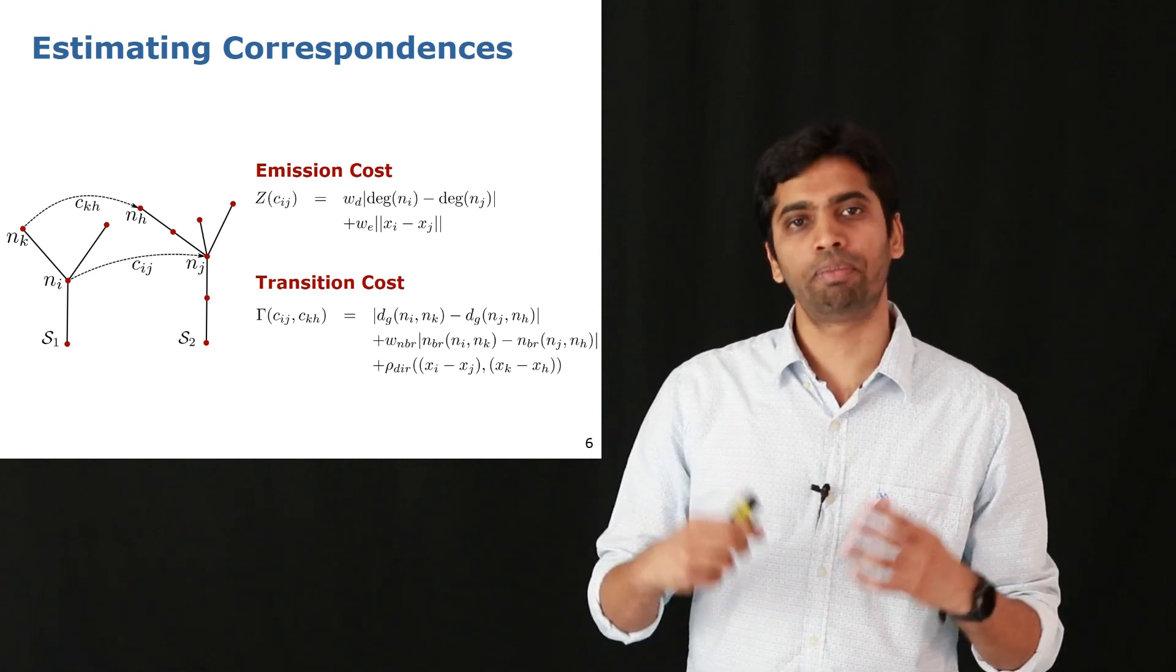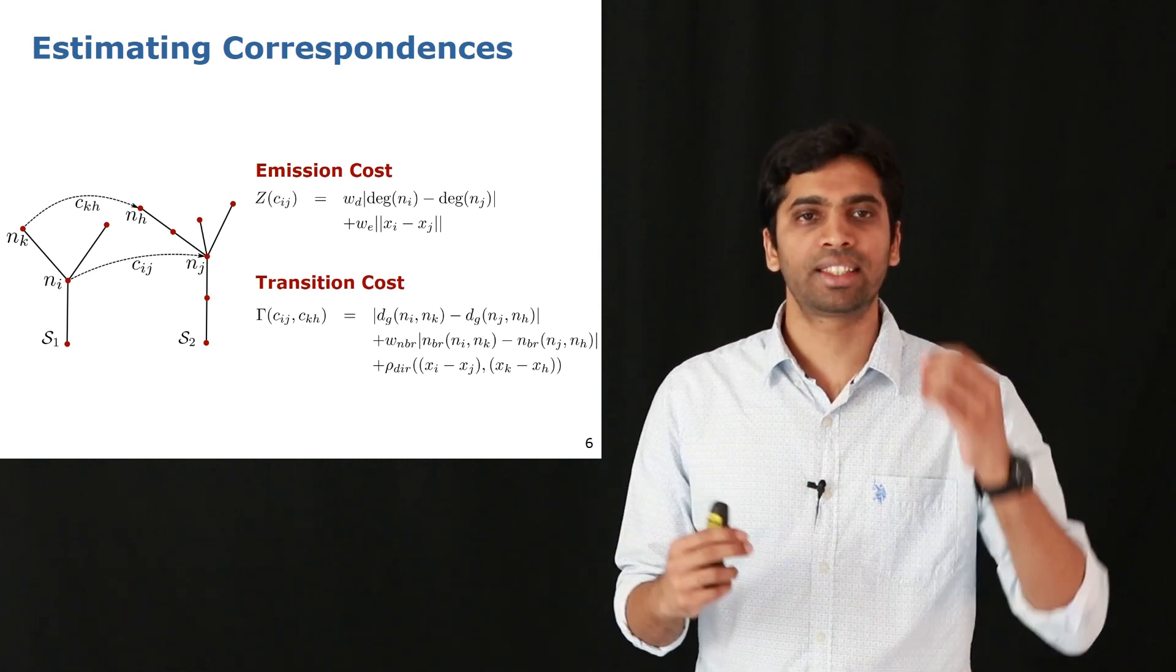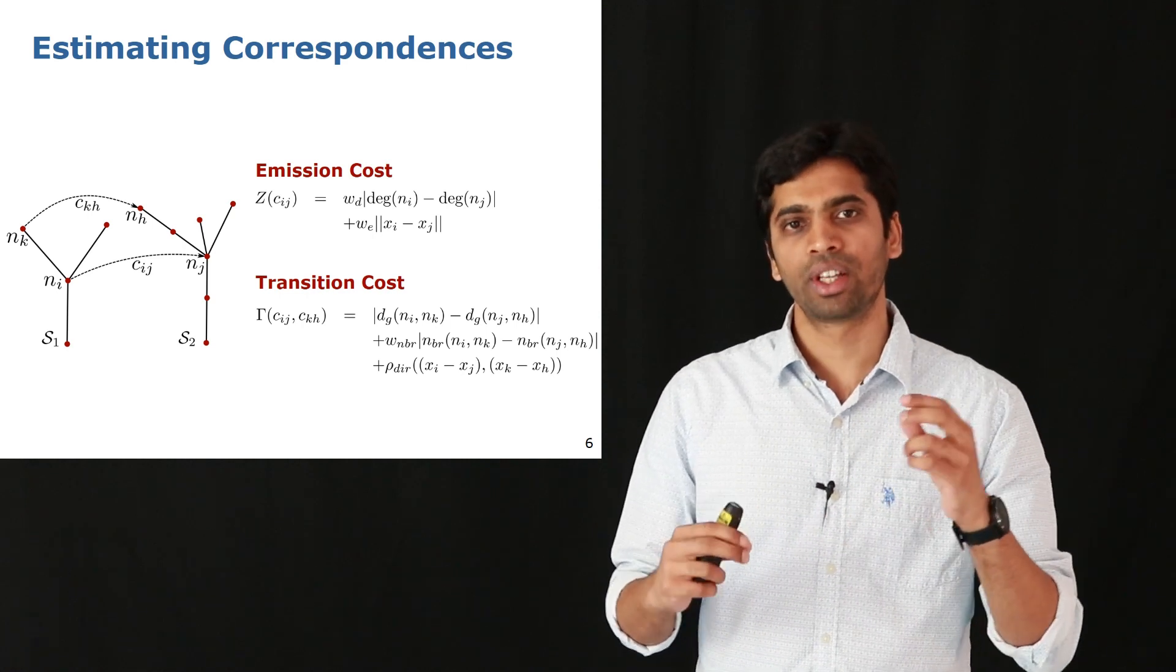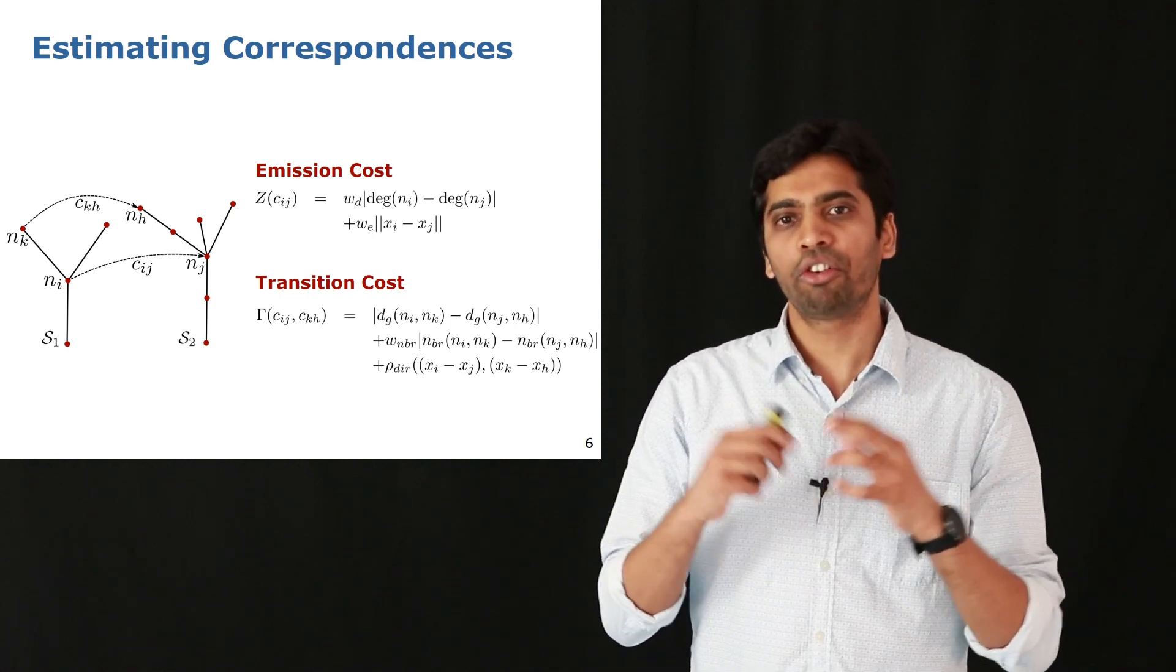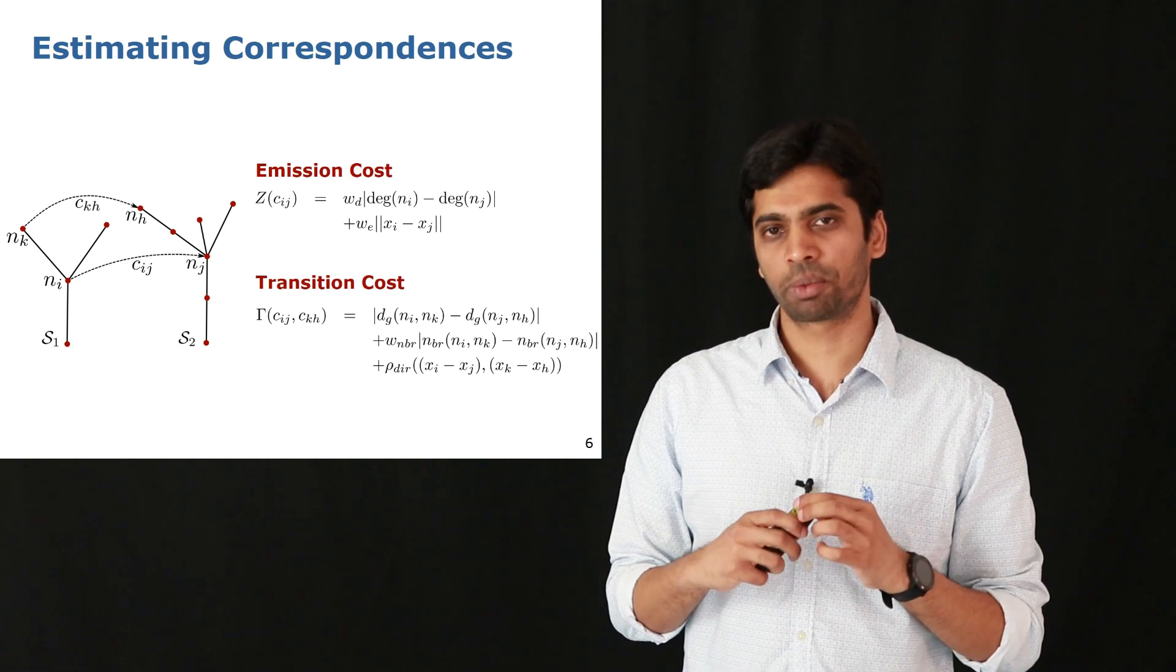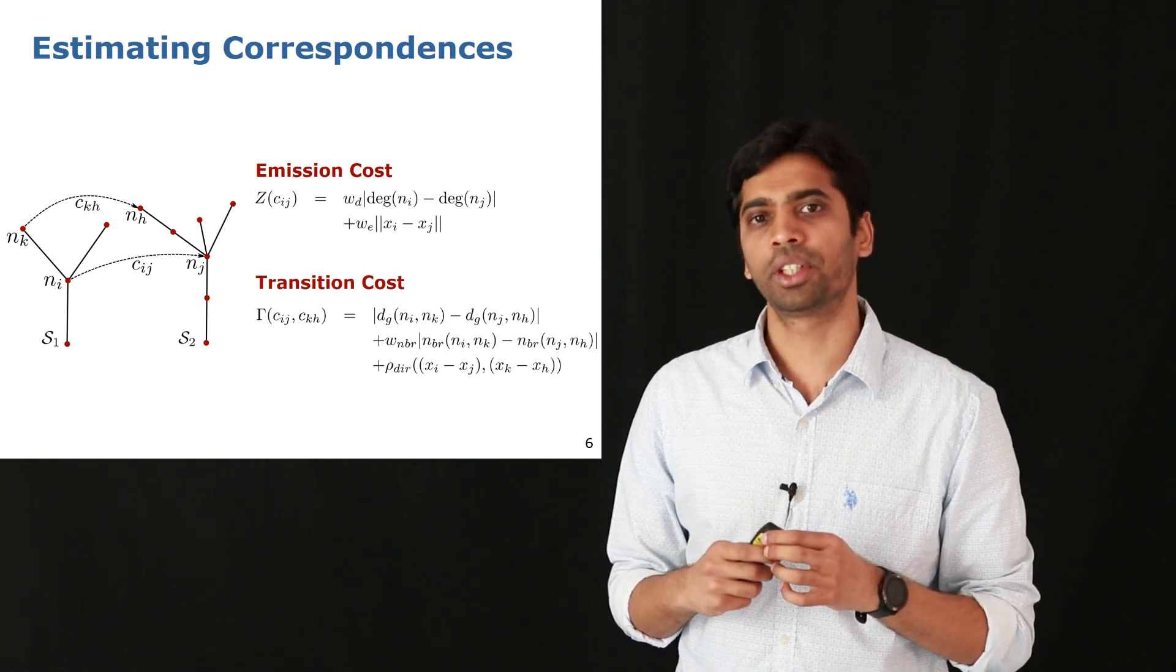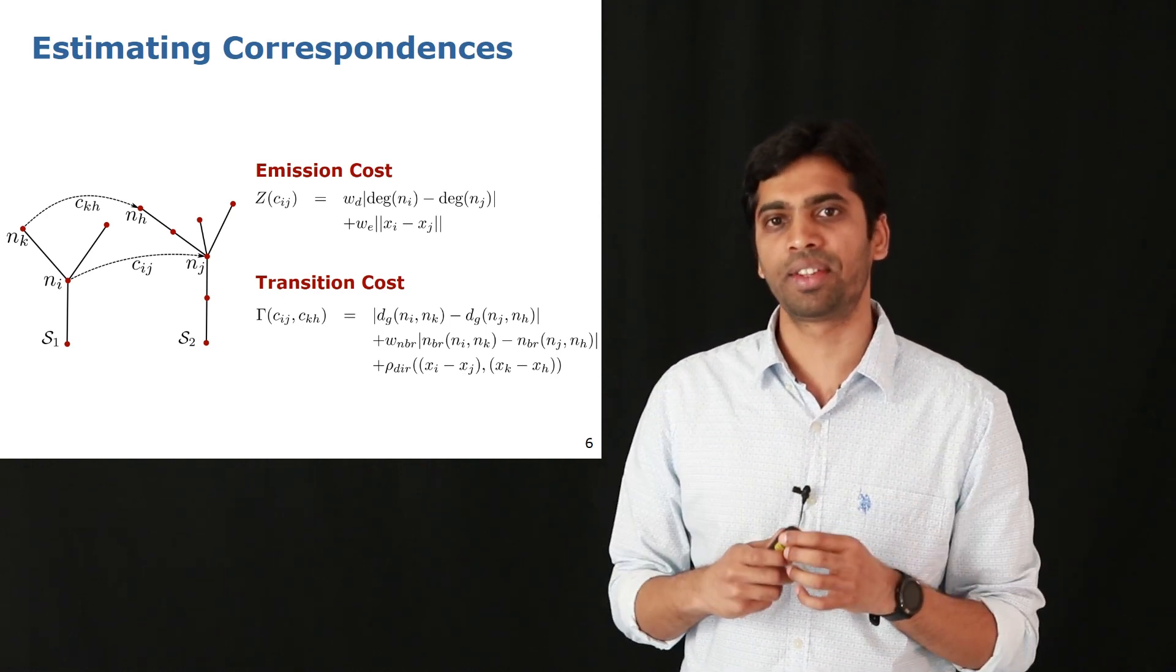Finally we have a penalty term which penalizes if the correspondences connect nodes which allow for a crisscrossing of these correspondences. We would like to have correspondences which are roughly oriented in the same direction.